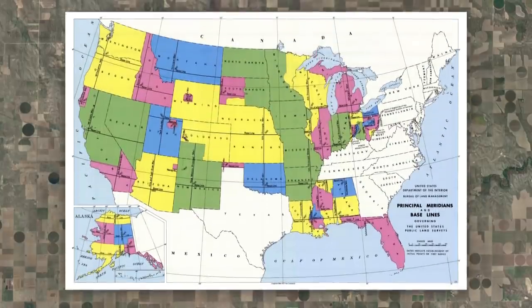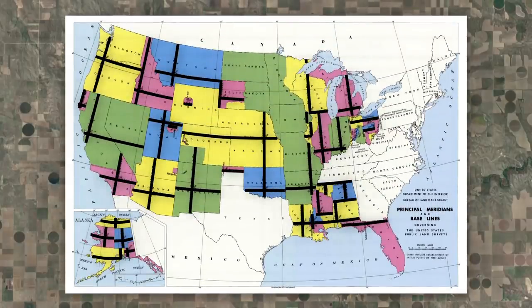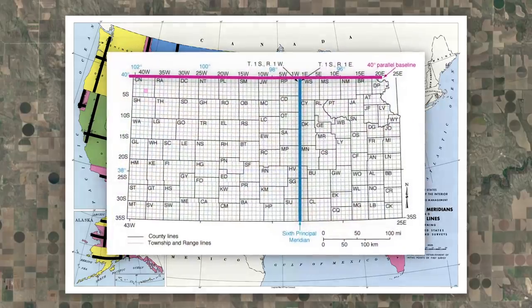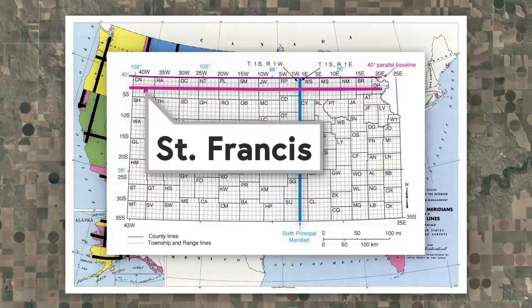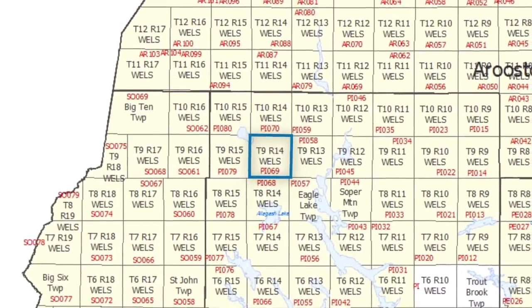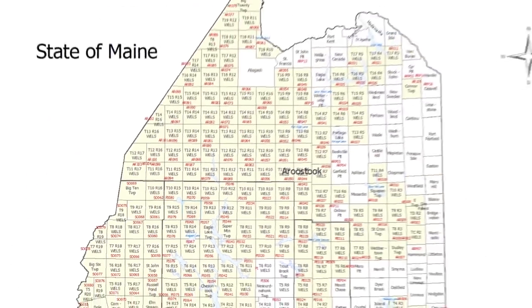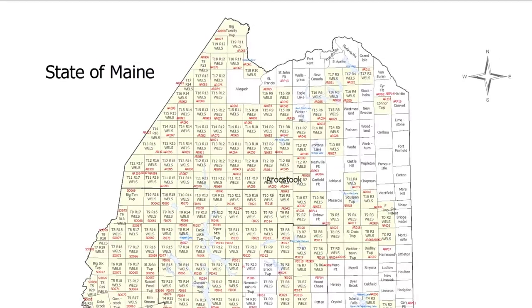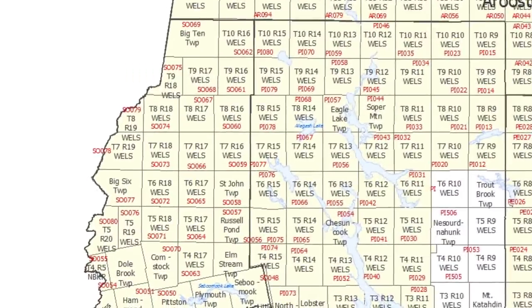Every state was designated a baseline and meridian from which the numbering of the townships would begin. For example, St. Francis, Kansas is S22 T3S R40W, since it's in section 22, three townships south of the baseline and 40 townships west of the meridian. Most places have renamed the different townships, but some, such as lovely T9R14 in Maine, have not. Since Maine still has townships with populations near zero, they just haven't bothered to rename many, so you'll still see blocks of land labeled on maps using this system.